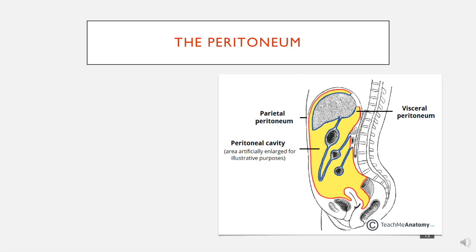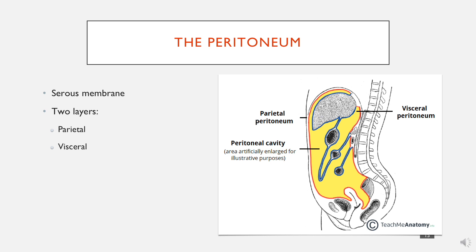The peritoneum is a serous membrane, similar to what you find in the pericardium and the pleura, and it has the same principles. There is a parietal layer that always lines the outside — shown in red on this diagram — and then there is a visceral layer which lines the organs, shown in blue on this diagram.